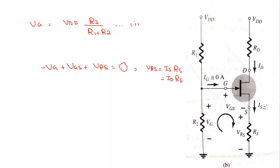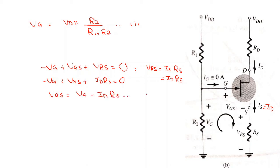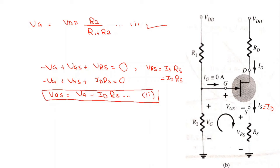We know that Vrs is equal to Is times Rs, and since Is is equal to Id in case of FET (because IG is approximately 0 ampere), we can write Vrs as Id times Rs. Rearranging, Vgs is equal to Vg minus Id times Rs. This is Equation 2, a very important equation for voltage divider biasing — it is the network equation.